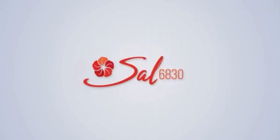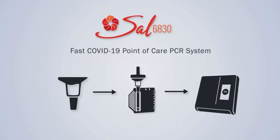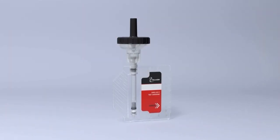MicroGem's Sal 6830 SARS-CoV-2 saliva test is a fast and non-invasive COVID-19 PCR test that accurately delivers results in under 30 minutes at the time and place where the test is given at the point of need. Here's how it works.